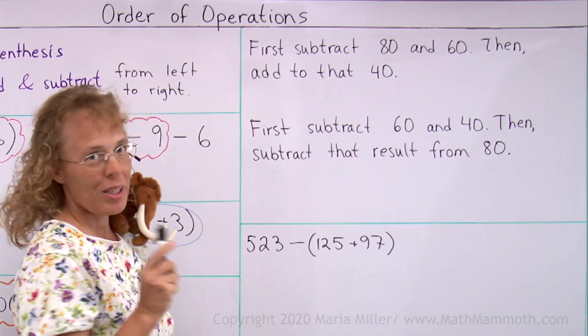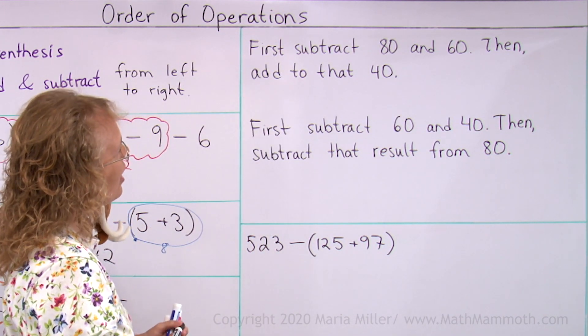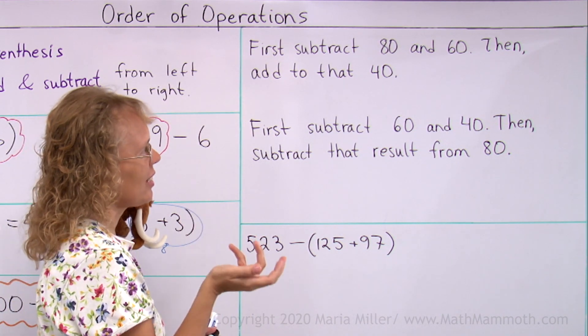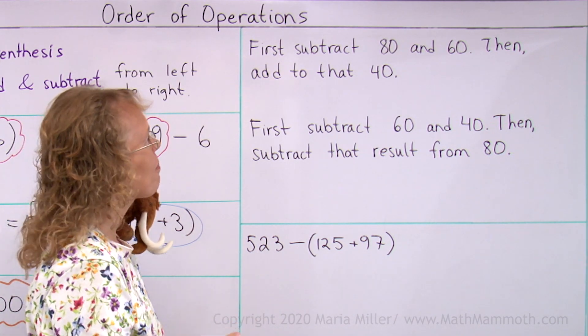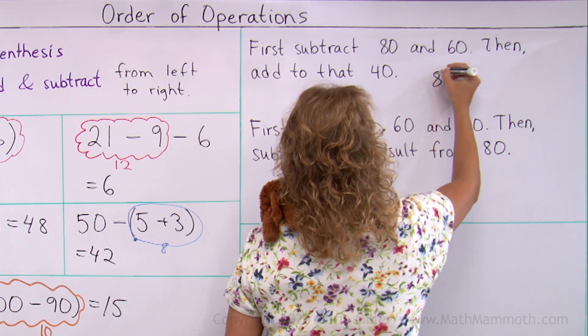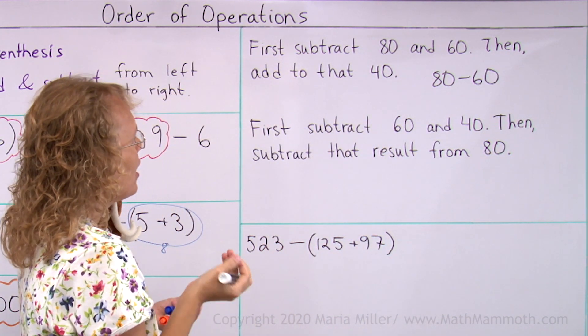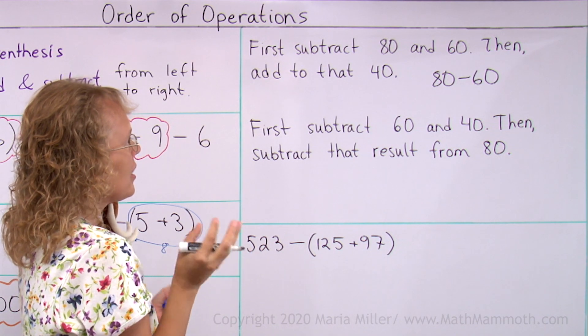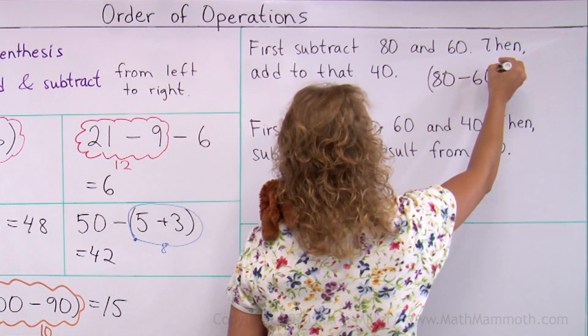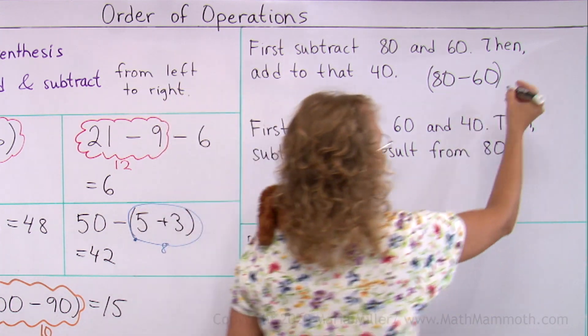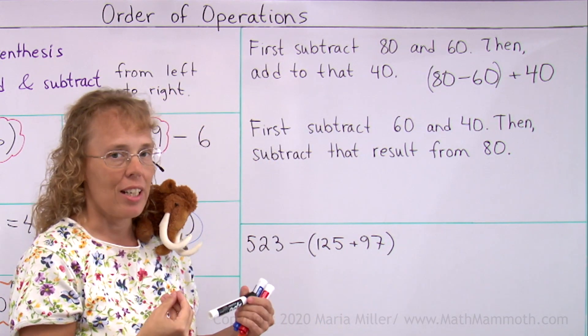Over here, we need to write the number sentence to match this wording. First, subtract 80 and 60. That's easy. 80 minus 60. And then add to that 40. So we have 80 minus 60. That's what we would do first. And then we add to that 40. Since it says first subtract, then I could use parentheses. I could write it like this. Make sure you do that first. And then you add to that 40. So that's the way to write it.